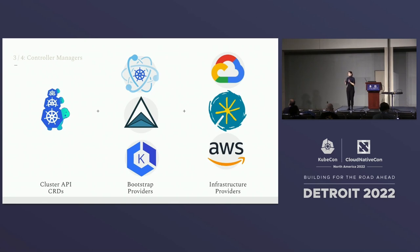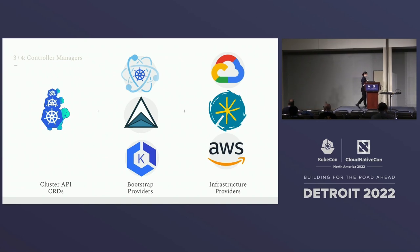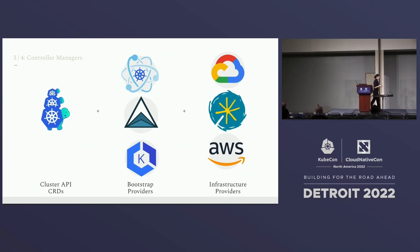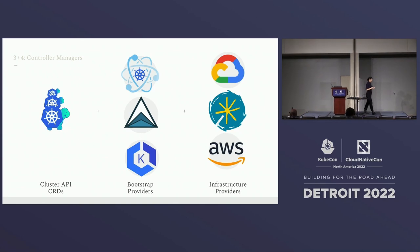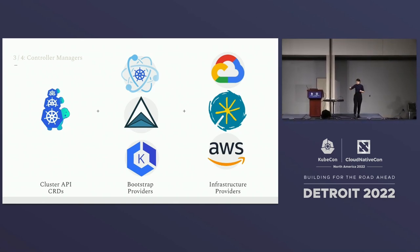Currently the bootstrap capability is provided by KubeADM, Talos, and quite recently AWS EKS as well. The third component is the infrastructure provider, which interacts with provider APIs and actually creates resources such as instances, VPCs, subnets, security groups, and many more.